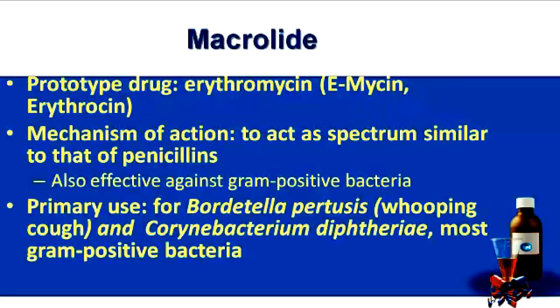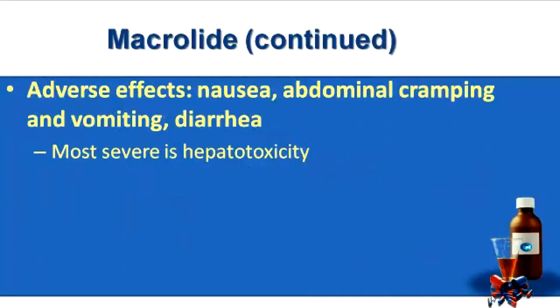With the macrolides, our prototype drug is erythromycin, also known as E-Mycin and Erythrocin. Its spectrum is going to be similar to that of penicillin, and it is also effective against gram-positive bacteria. It's primarily indicated for Bordetella pertussis, also known as whooping cough, and Corynebacterium diphtheriae, as well as most gram-positive bacteria. Adverse effects can include nausea, abdominal cramping, vomiting, and diarrhea. Importantly, nausea is not a symptom of an allergic reaction. The most severe adverse effect of macrolide administration is hepatotoxicity.